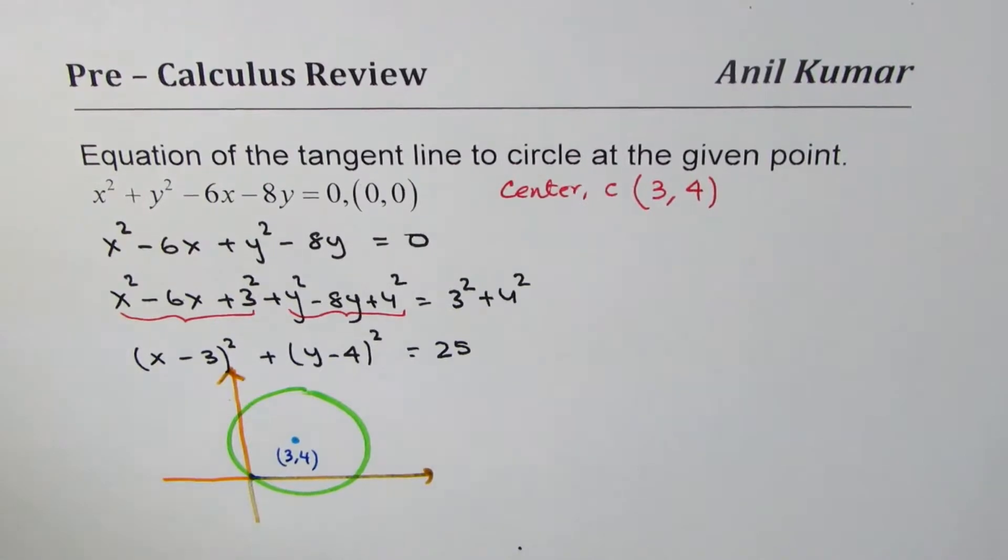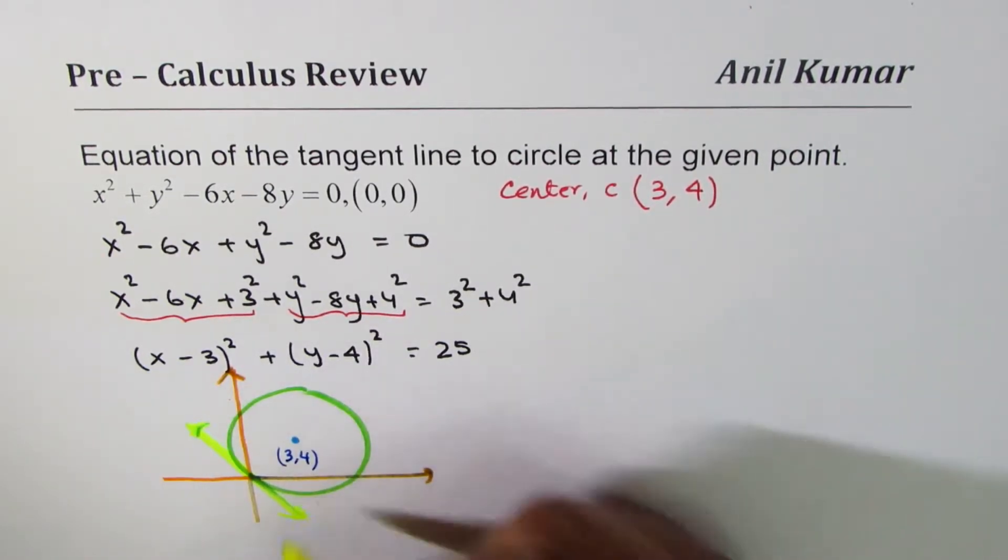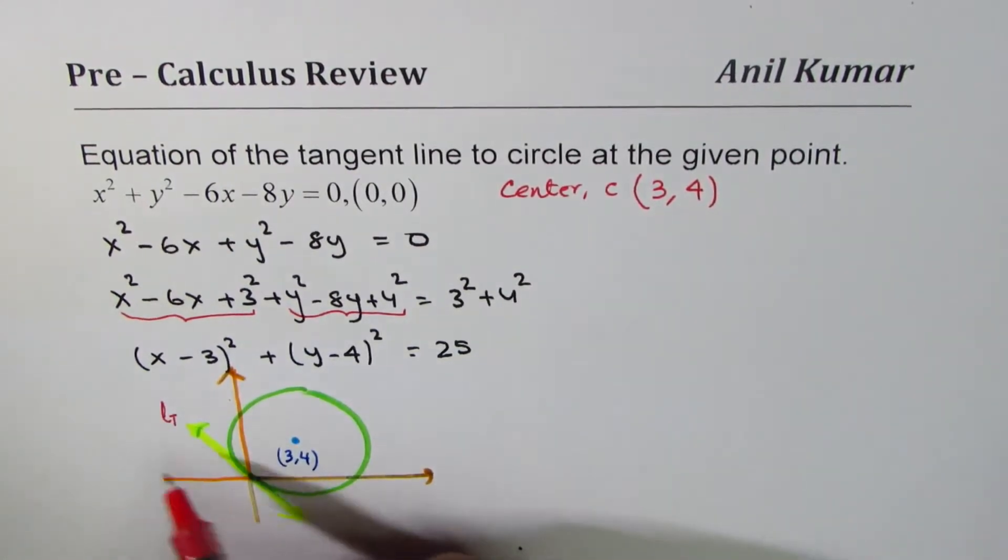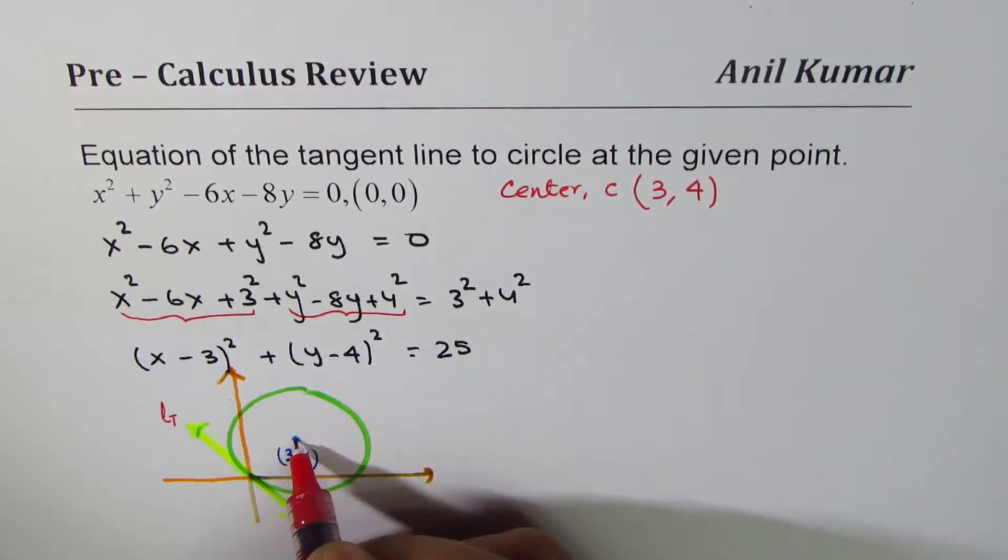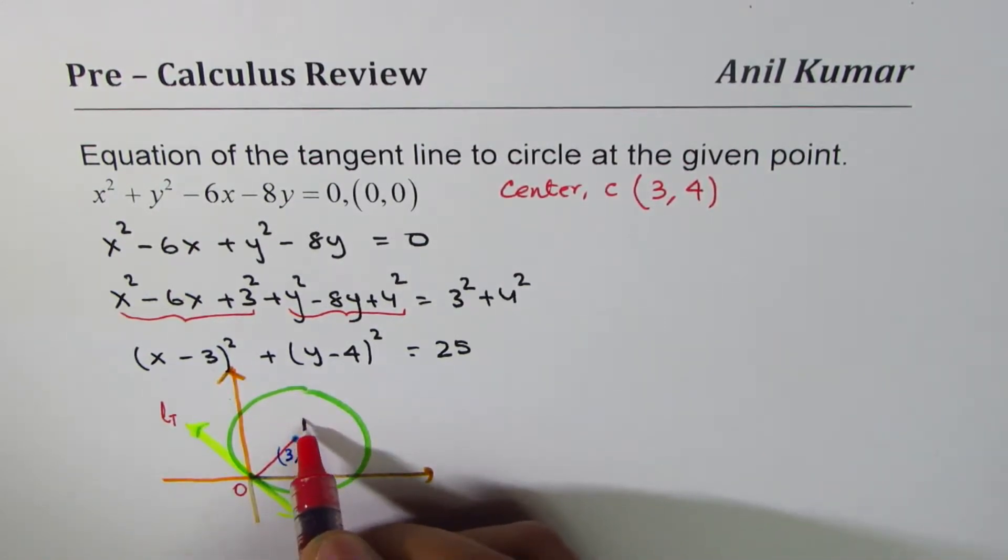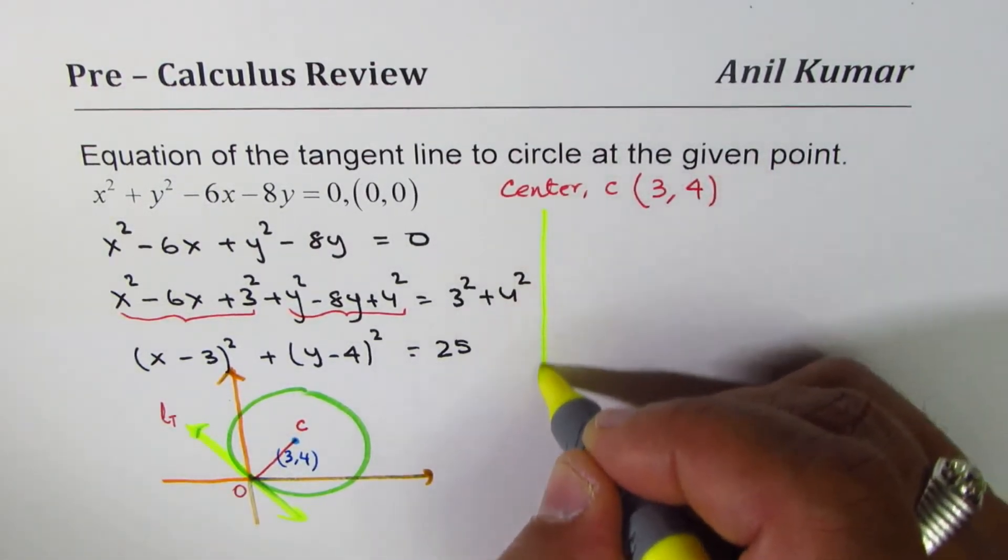Since the tangent we have to find is at the origin, I'll do like this. These are rough sketches but they will help you to understand the concept. So the tangent is at this point. Let's say this is my tangent. That is the situation. You need to find equation of this tangent line. Let's call this line as LT. To find the equation of this tangent line, we'll connect center with the given point which is (0,0). Let's call this point, center as C.